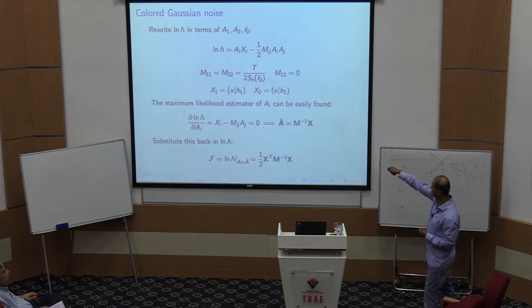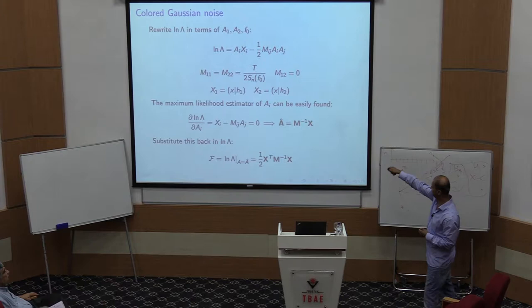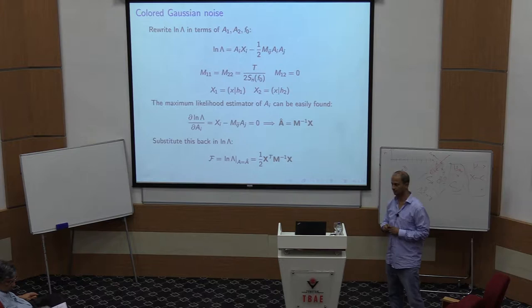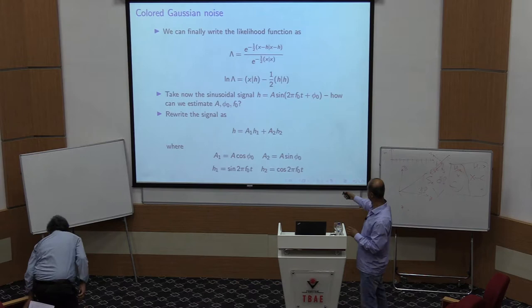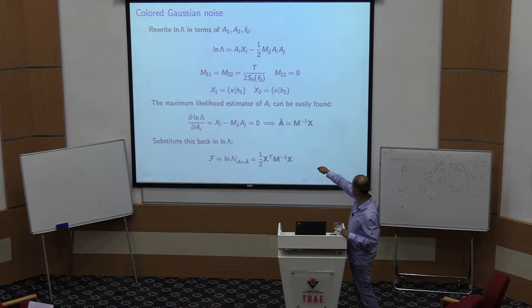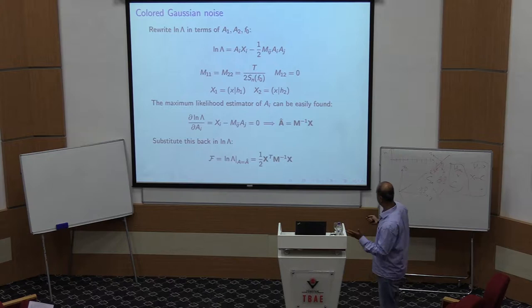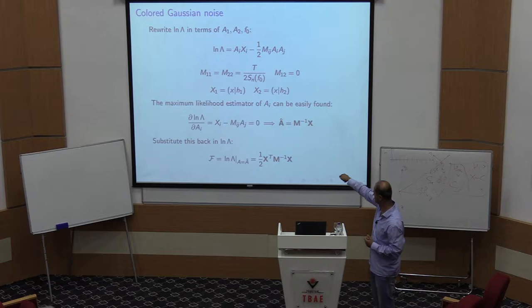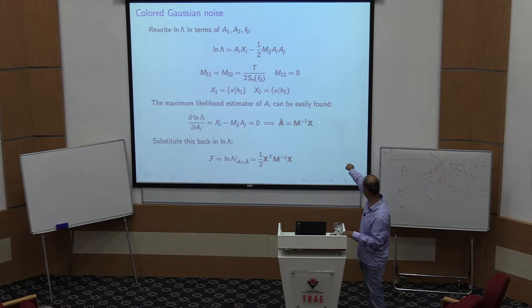We write the log likelihood in the form: a1 times some xi (i from 1 to 2) plus a quadratic matrix term in a1 and a2. In this simple signal model, the matrix is diagonal. The diagonal entries are T divided by the spectral density, and x1 and x2 are just the inner products of the data with the basis functions h1 and h2.